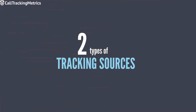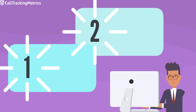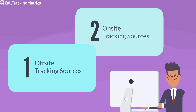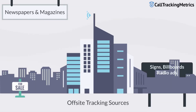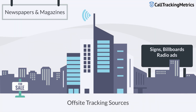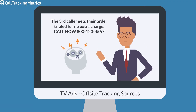There are two types of tracking sources: off-site and on-site tracking sources. Off-site tracking sources are your traditional advertising methods, like signs, billboards, newspapers, and radio ads. TV ads would also be an off-site tracking source.